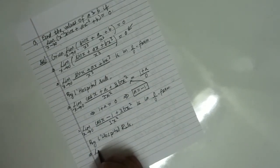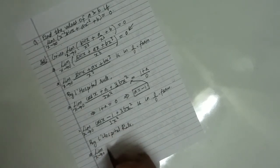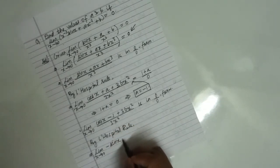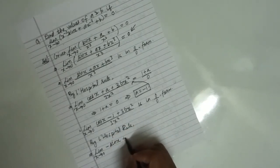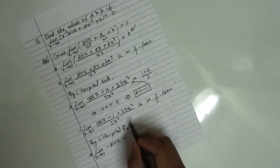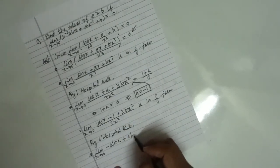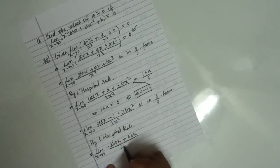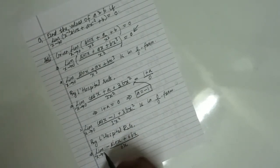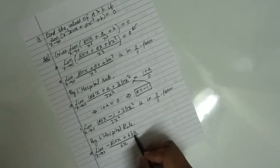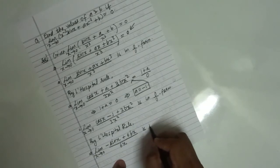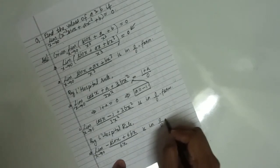Applying L'Hôpital's rule again, we take the derivative: limit x tends to 0 of minus sin x plus 6bx over 6x. Putting x equal to 0 gives sin 0 equals 0 in the numerator and 0 in the denominator, so this is still in 0 by 0 form.